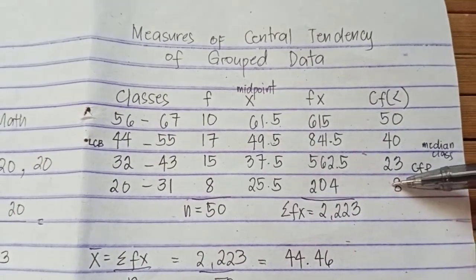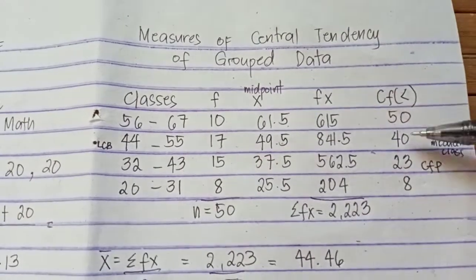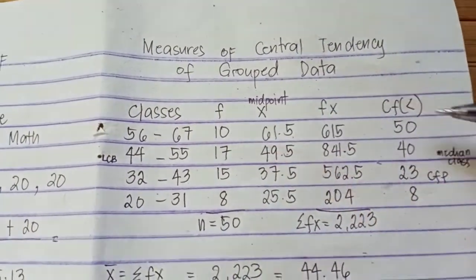Copy the first frequency 8 plus 15, 23 plus 17, 40 plus 10 equals 50.